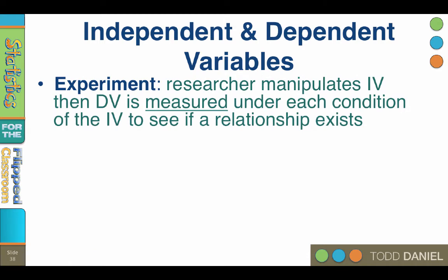In a scientific experiment, we start with the IVs and then we measure the DVs. A researcher manipulates the independent variable, then the dependent variable is measured under each condition of the independent variable to see if a relationship exists. Like, is there a relationship between becoming emotionally stable and later being successful in a marriage? If we measured people for their emotional stability and then measured them for their level of relationship happiness, would we find a link between those variables?